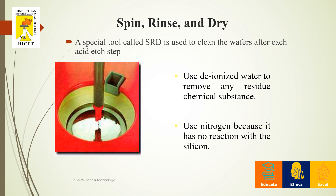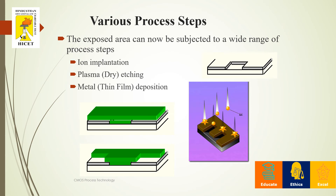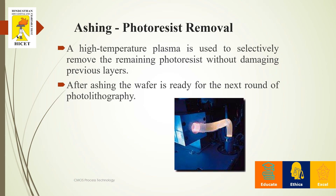We will now see a few more process steps to complete the CMOS fabrication process. The exposed areas can be subjected to different process steps: ion implantation, plasma etching, and thin film deposition. Once all this is done, the photoresist is removed using the ashing technique, where a high-temperature plasma removes the remaining photoresist without damaging the previous layers. After ashing, the wafer is ready for photolithography.